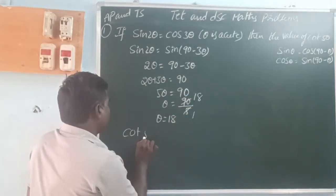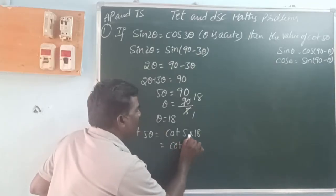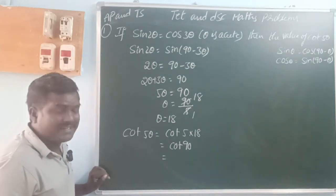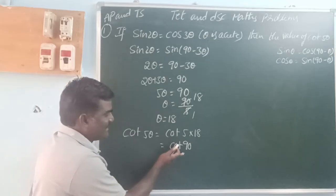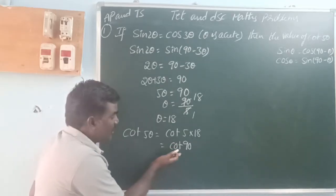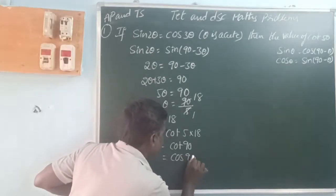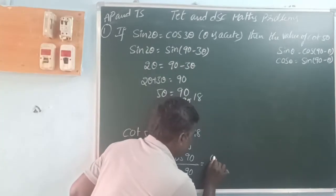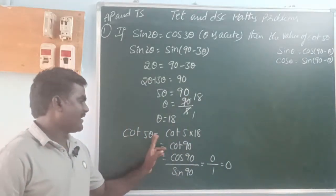So θ is equal to 90 divided by 5, which gives θ equals 18 degrees. Therefore we need cot 5θ, which is cot 90. Now cot 90 means cos 90 divided by sin 90. cos 90 is 0 and sin 90 is 1, so 0 divided by 1 equals 0. So cot 5θ equals 0.